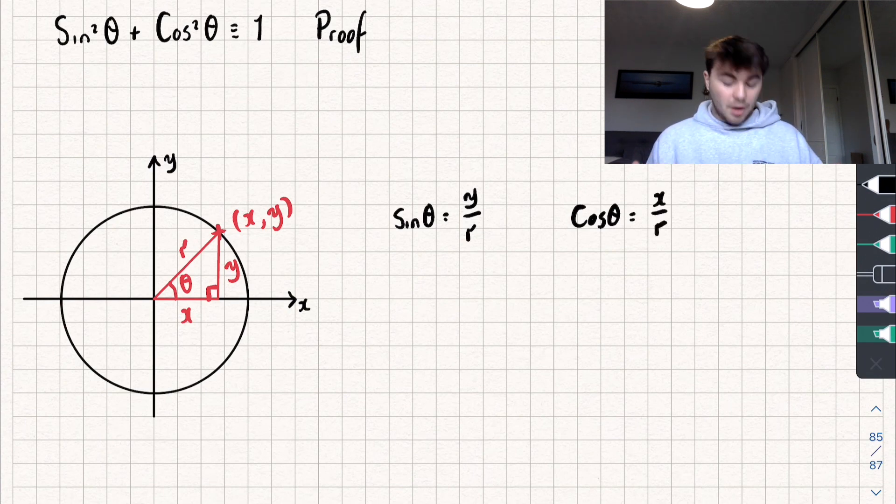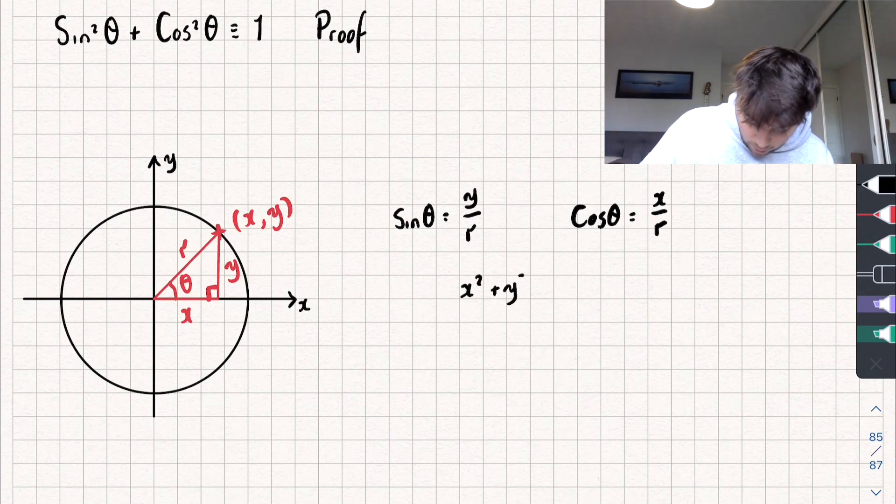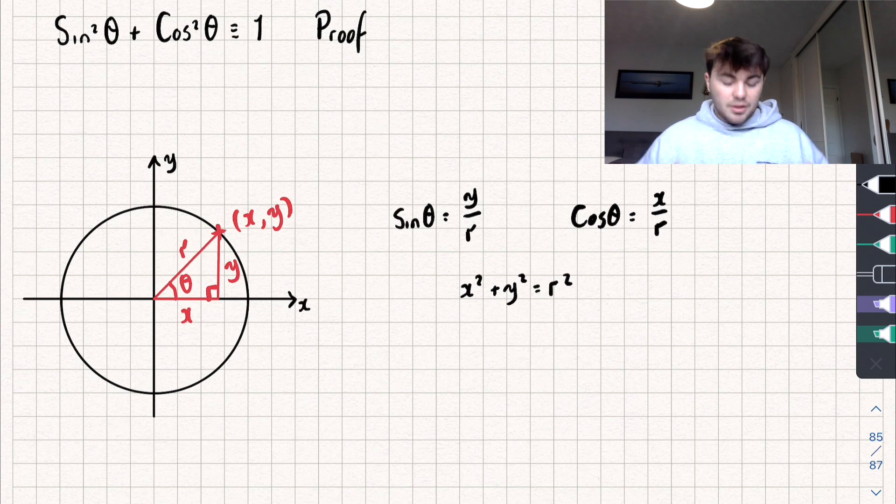I could also use Pythagoras and say that x squared plus y squared is going to be equal to r squared. So now let's see if we can use this to construct the proof.